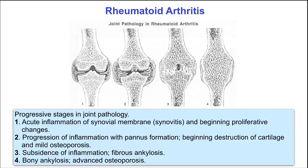The progressive stages of rheumatoid arthritis include: first, acute inflammation of the synovial membrane (synovitis) and the beginning of proliferative changes; second, progression of inflammation with pannus formation, beginning destruction of the cartilage, and often mild osteoporosis in the bone; third, inflammation subsides but fibrous ankylosis or joint fusion starts to occur; and in the final phase, bony ankylosis and advanced osteoporosis set in.